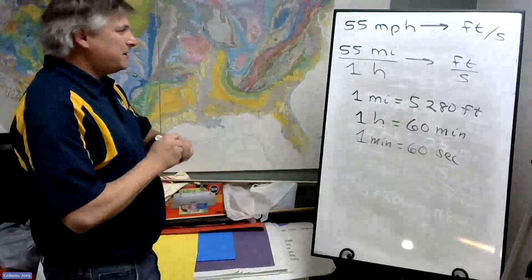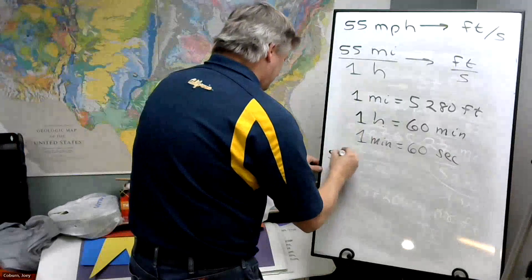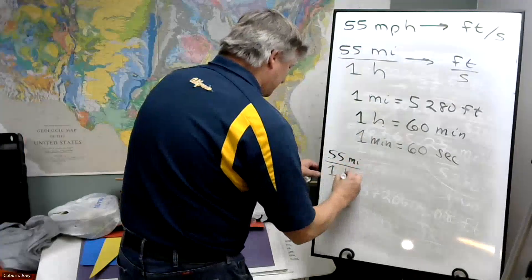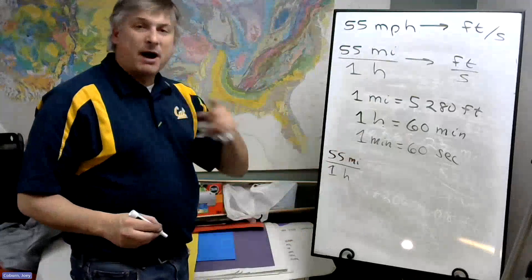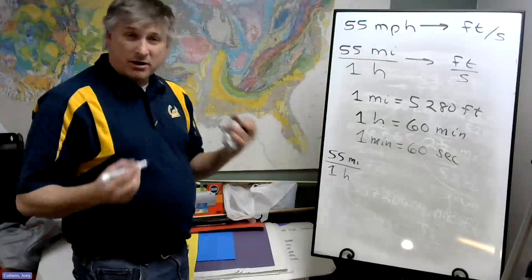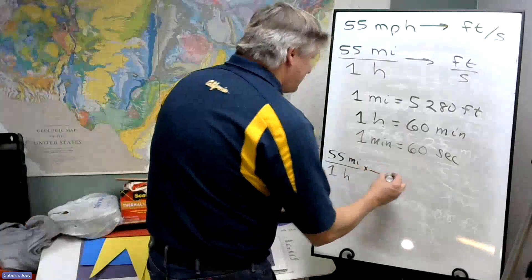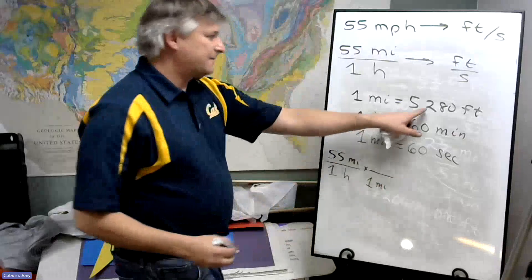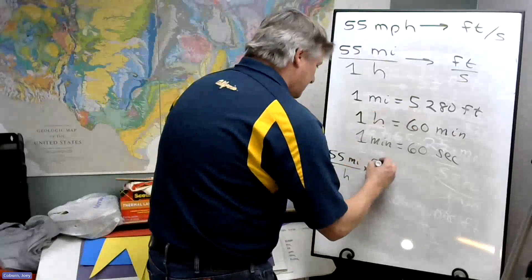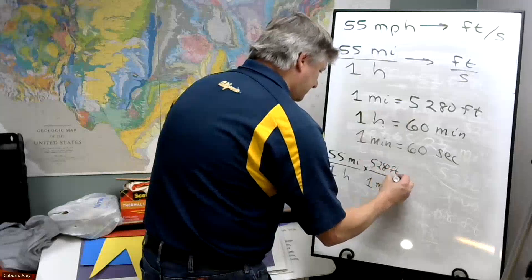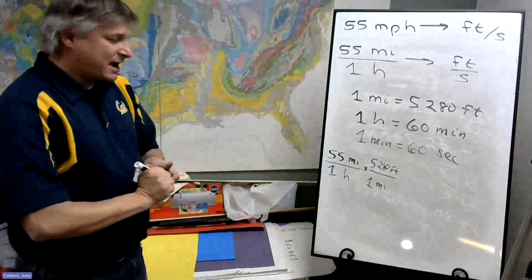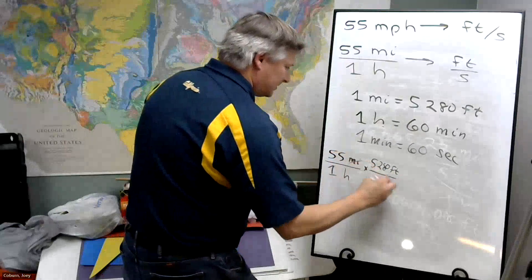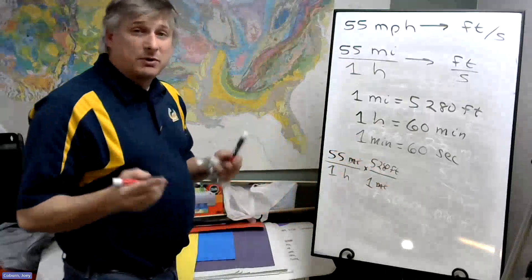But suppose we're going to do the chain method. Well, we want to convert miles first. We want to turn it into feet. So that means we need the miles on the bottom and the feet on top. And now the miles will cancel, the feet remain, so that means we're doing this correctly.